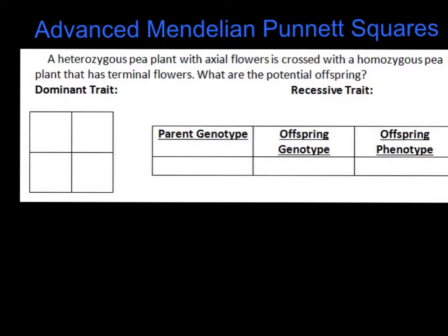One of the clues for this is the heterozygous individual. Remember, heterozygous — the prefix 'hetero' means different. That means this individual is going to have one of the dominant alleles and one of the recessive alleles. Because of that, a heterozygous individual is always going to display the dominant trait, because dominant overpowers recessive. So in this case, if something is listed as heterozygous, then its trait is going to be the trait that is dominant. It says the heterozygous pea plant with axial flowers, so axial is our dominant trait.